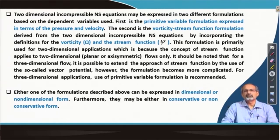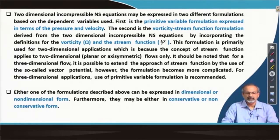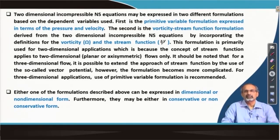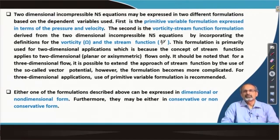However, from a mathematical perspective, bringing in derived parameters like vorticity and stream function is very useful in devising the second approach, called the vorticity stream function formulation. This approach works fairly efficiently in two dimensional flows — be it planar or axisymmetric — because the concept of stream function is essentially two dimensional. However, if you try to extend this approach to a three dimensional scenario, you would have to bring in more complex vector potential concepts which could be rather complicated to implement in comparison with the primitive variable approach. Therefore, when solving a three dimensional problem you would generally prefer the primitive variable formulation.